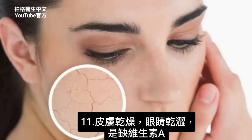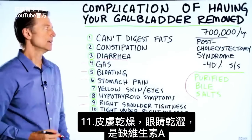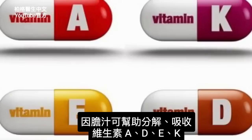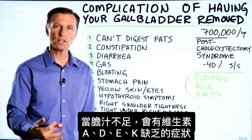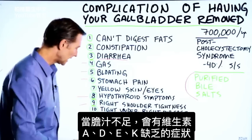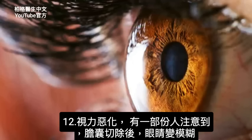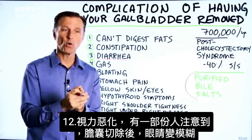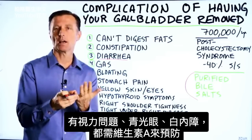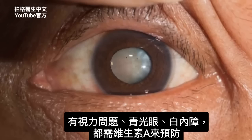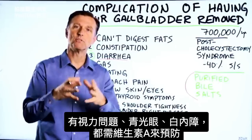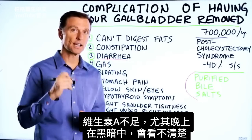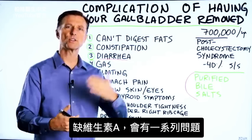Dry skin and dry eyes indicate a vitamin A deficiency. Because bile helps you break down and absorb vitamins A, D, E, and K, a deficiency of bile could give you symptoms of vitamin A, E, D, or K deficiency. Then we have vision problems — a certain percentage of the population notice their eyes are blurry after having their gallbladder removed, or they have vision issues, glaucoma, or even cataracts. You need vitamin A to prevent those conditions, so without enough vitamin A you may have difficulty seeing, especially in the dark at night. That lack of vitamin A can create a whole series of issues.